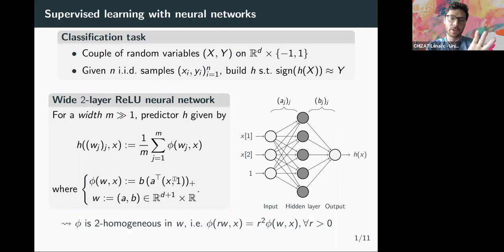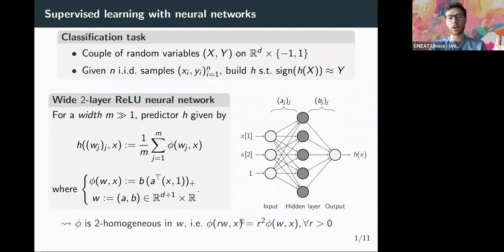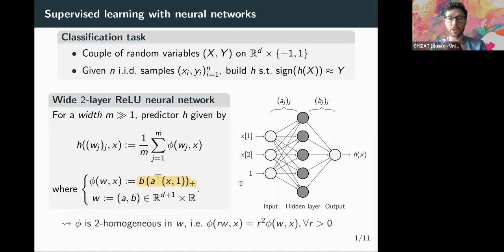More generally, the analysis applies when phi is 2-homogeneous in the parameter w. This is a crucial assumption: when the parameters are multiplied by a scalar r, the output is multiplied by r squared. This follows from the fact that in ReLU networks, multiplying both a and b by r yields r squared in the output. This defines the class of predictors we will consider.